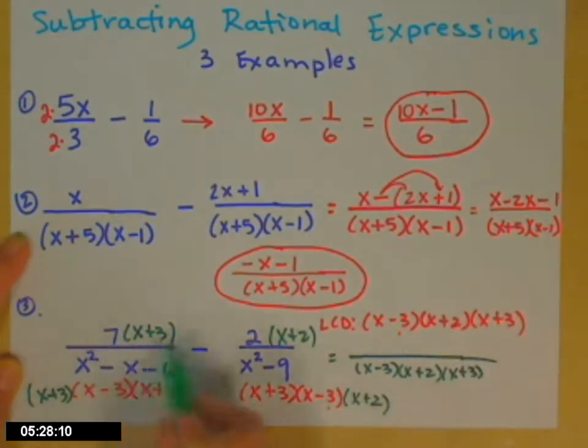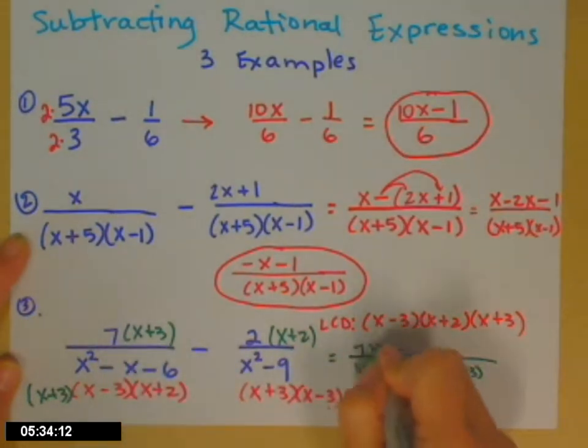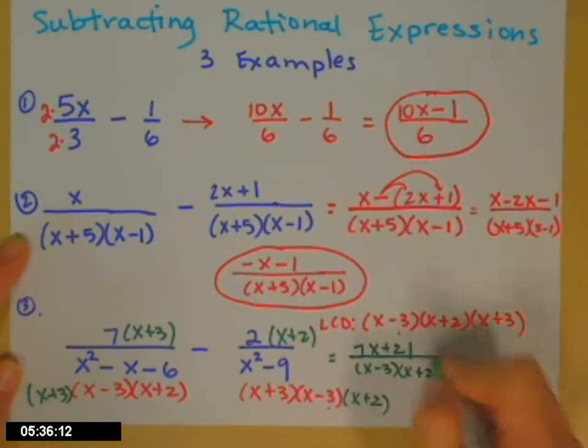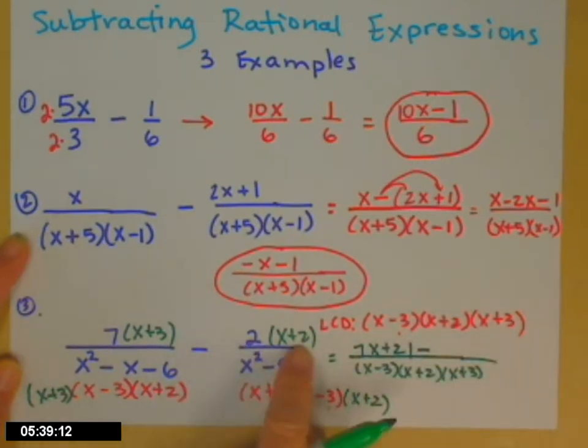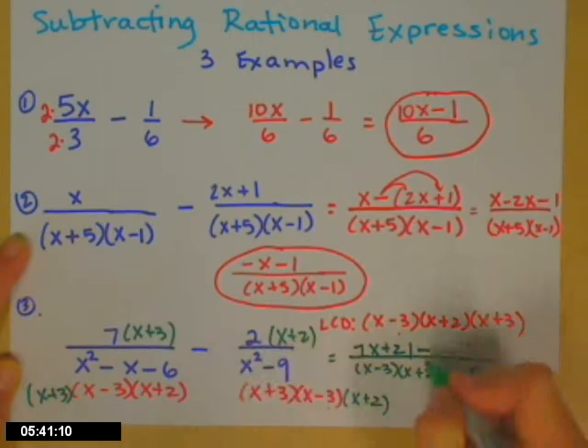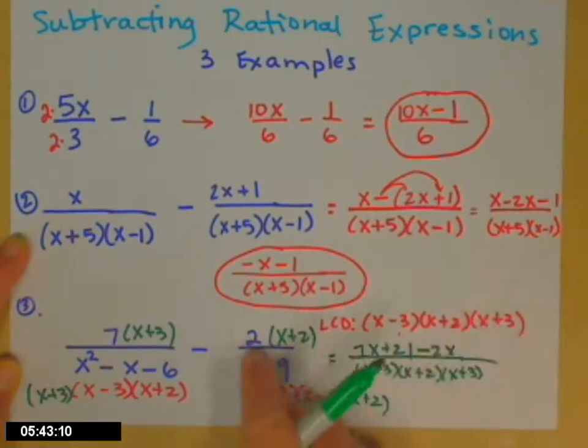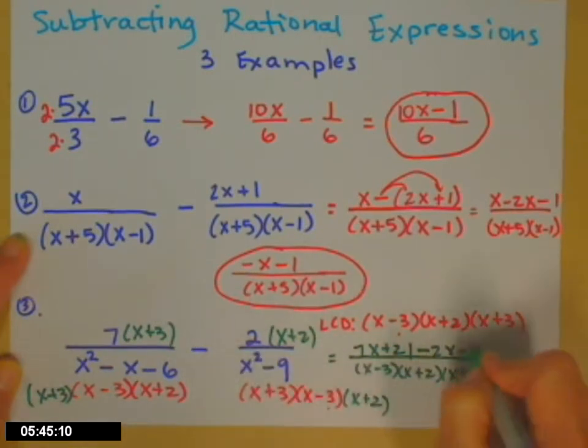And then in the top, I have 7 times. I'm out of room, so you guys are going to bear with me. I'm going to go ahead and distribute. So 7x plus 21. Stay with me. Now it's negative 2 distributing. So minus 2x minus 4. Last step. I'm not there yet because that numerator tidies. Let's go ahead and do that. I'll grab another color so you can see it.